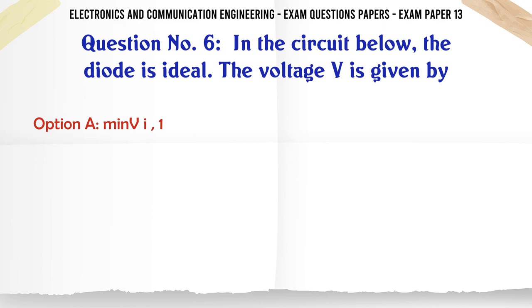In the circuit below the diode is ideal. The voltage V is given by: A: Min V I 1, B: Max V I 1, C: Min negative V I 1, D: Max V I 1. The correct answer is Max V I 1.